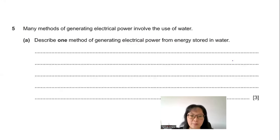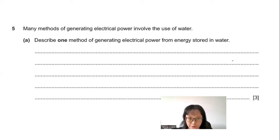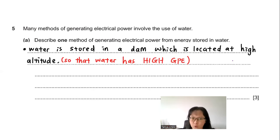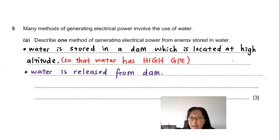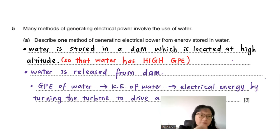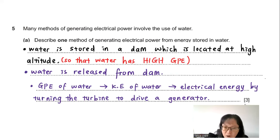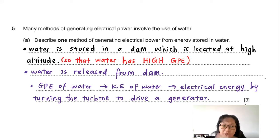Question 5: Many methods of generating electrical power involve the use of water. Part A: Describe one method of generating electrical power from energy stored in water. Water stored in a dam at high altitude has high gravitational potential energy. When released, the GPE converts to kinetic energy as the water flows down to the base, where it turns a turbine to drive a generator.